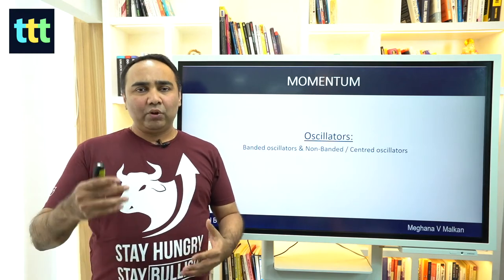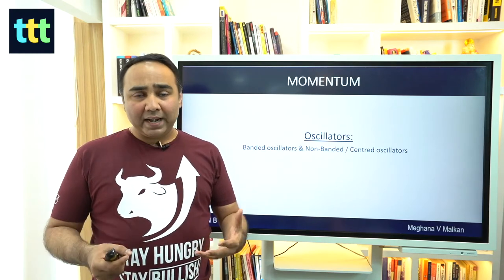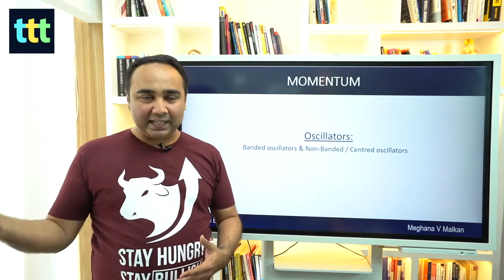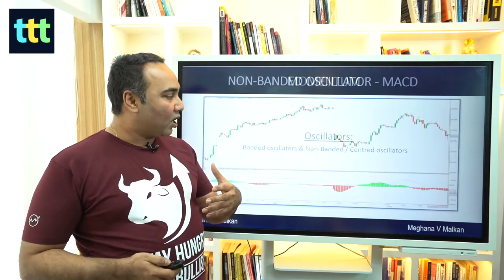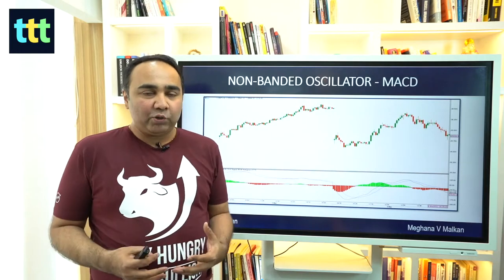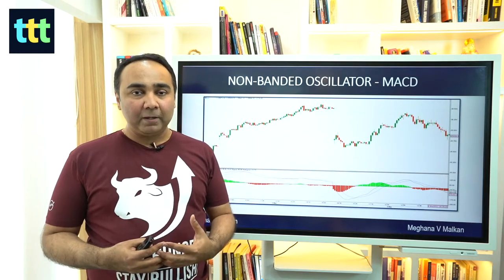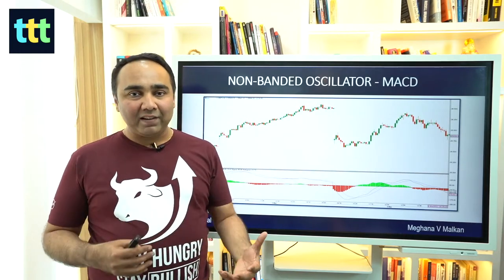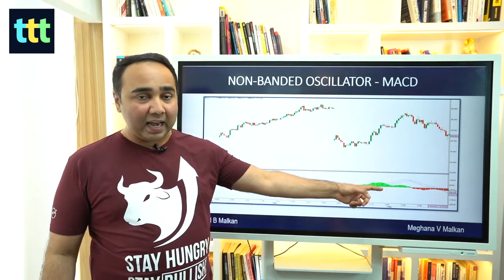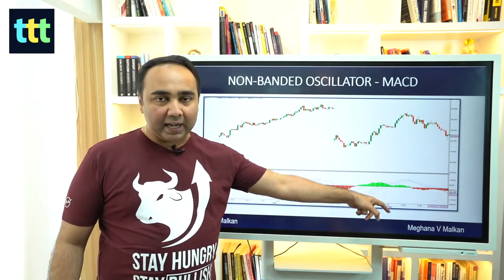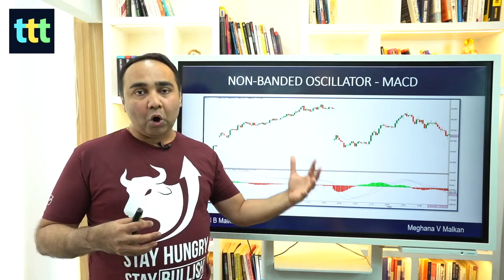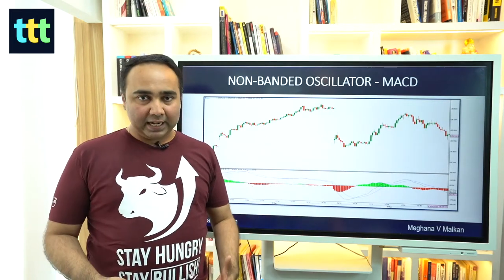A banded oscillator is like your speedometer — it's banded from 0 to 240 or 0 to 360. A non-banded oscillator is something like MACD, which is very popular — Moving Average Convergence Divergence. It has a zero line or center line and it goes positive and negative. This is called a non-banded or centered oscillator.